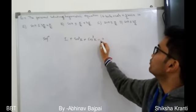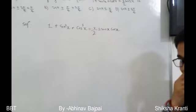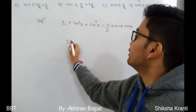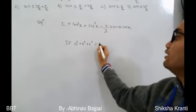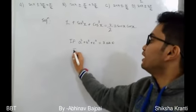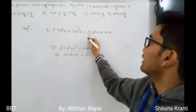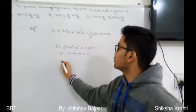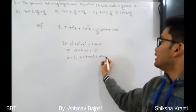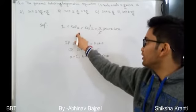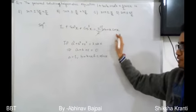Expanding sin 2x = 2 sin x cos x, the equation becomes 1 + sin³x + cos³x = 3 sin x cos x. From algebra, we know that a³ + b³ + c³ = 3abc implies a + b + c = 0. Comparing, we set a = 1, b = sin x, c = cos x.